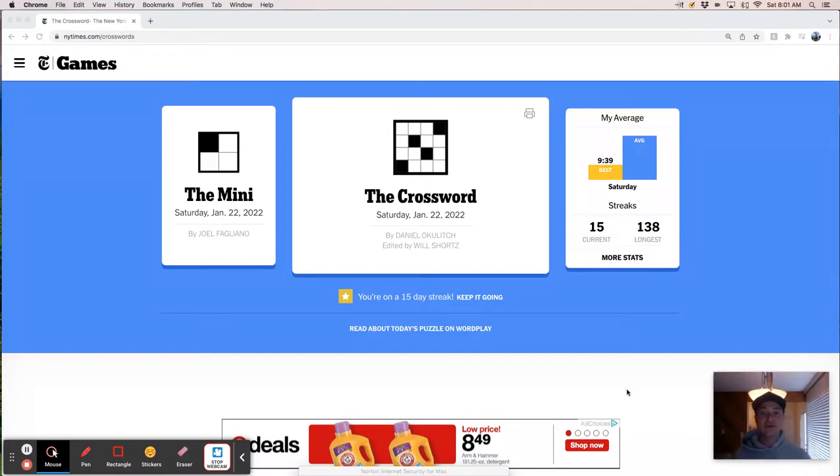Hey, good morning. It's Saturday, January 22nd, and we're going to solve the New York Times crossword puzzle. This one's constructed by Daniel Okulich, which is not a name I'm familiar with. Might be a debut constructor, I'm not sure. I hope you guys had a good week and your weekend's off to a decent start. Let's see how this Saturday puzzle goes.